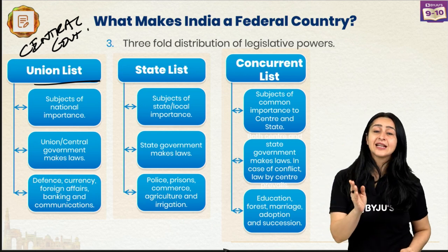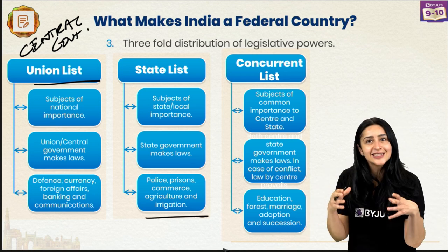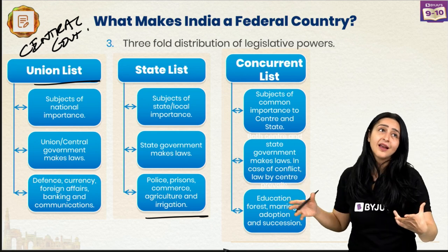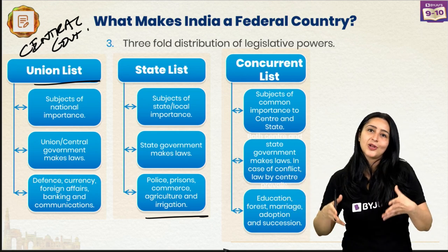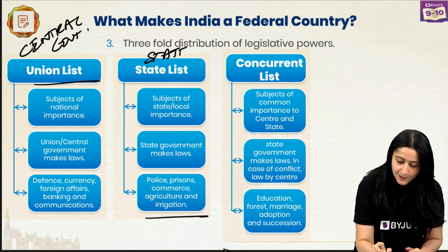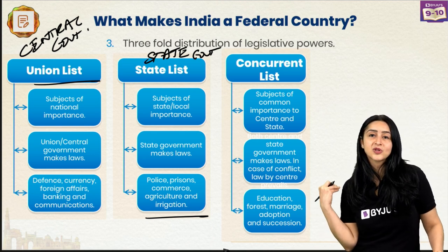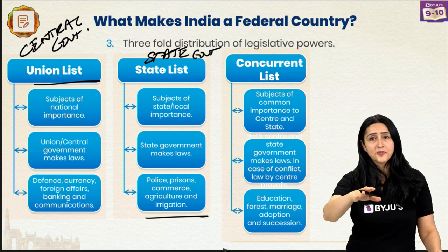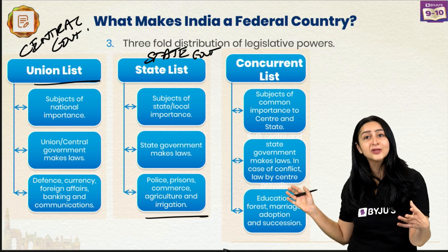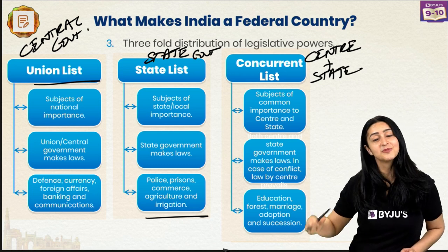The State List contains subjects like police, trade, commerce, and agriculture, which obviously would be very different state to state. The state government makes laws on these particular subjects. Then we have a third category — the Concurrent List — which includes subjects like marriage, forests, and adoption. In the case of these subjects, both the center and the state can make laws.